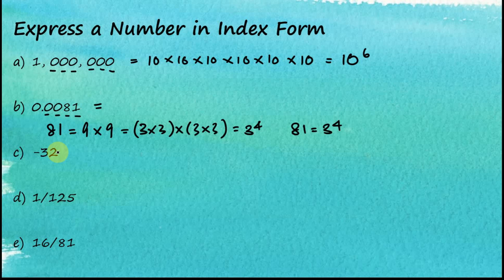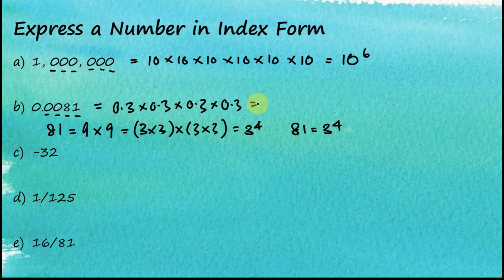For 0.0081, we have four decimal places, and therefore we can deduce that this is equal to 0.3 times 0.3 times 0.3 times 0.3 — multiplied by itself four times. This is equal to 0.3 to the power of 4. This is how we write a number in index form.